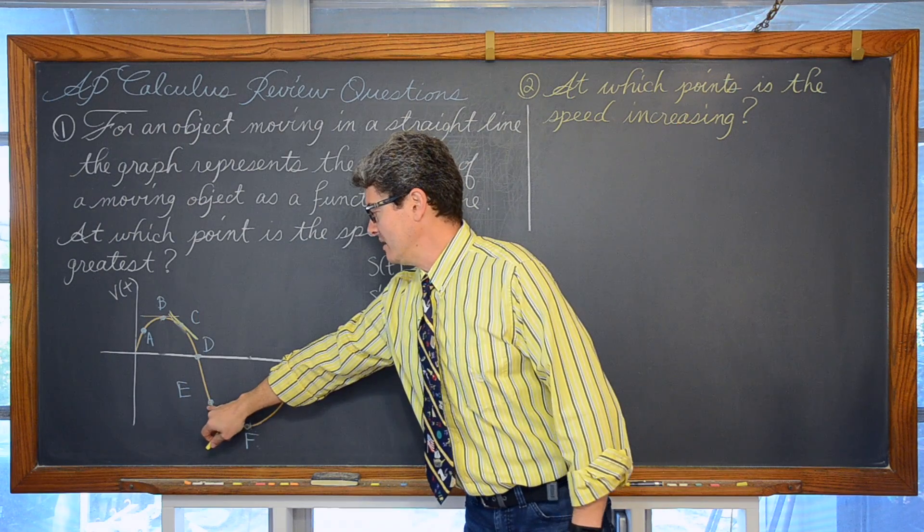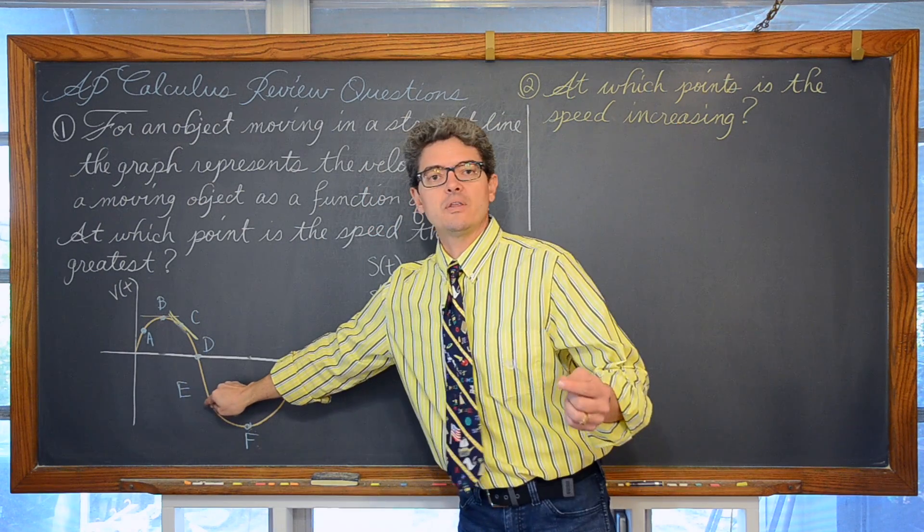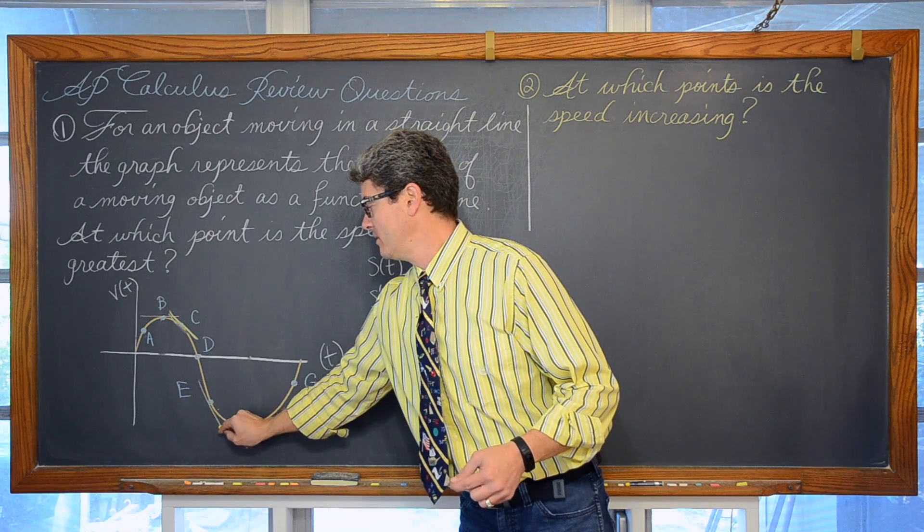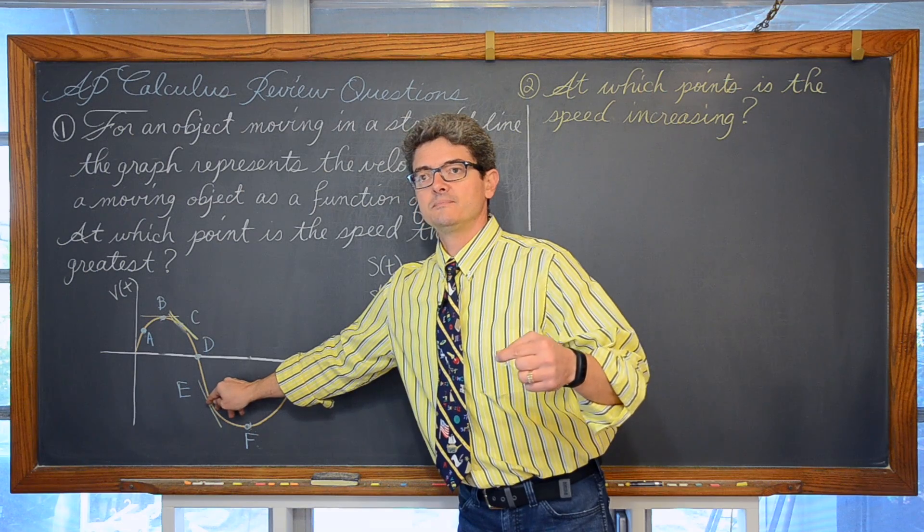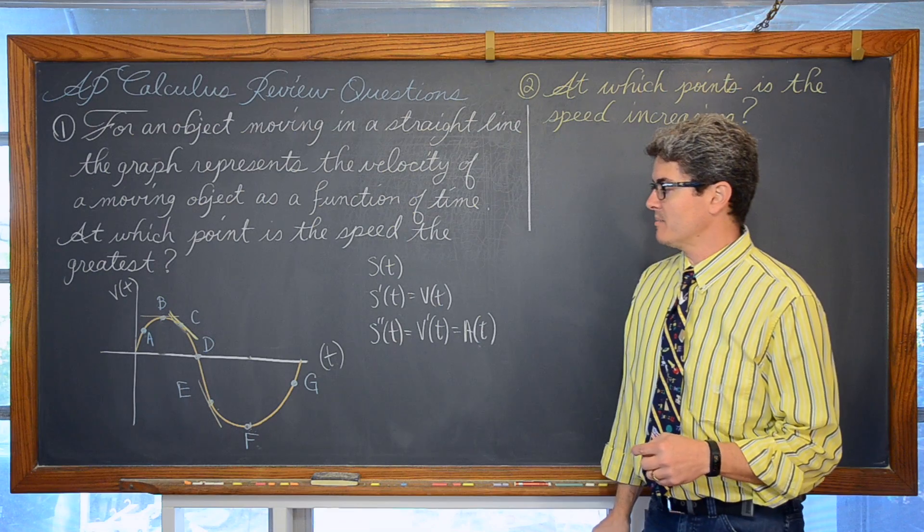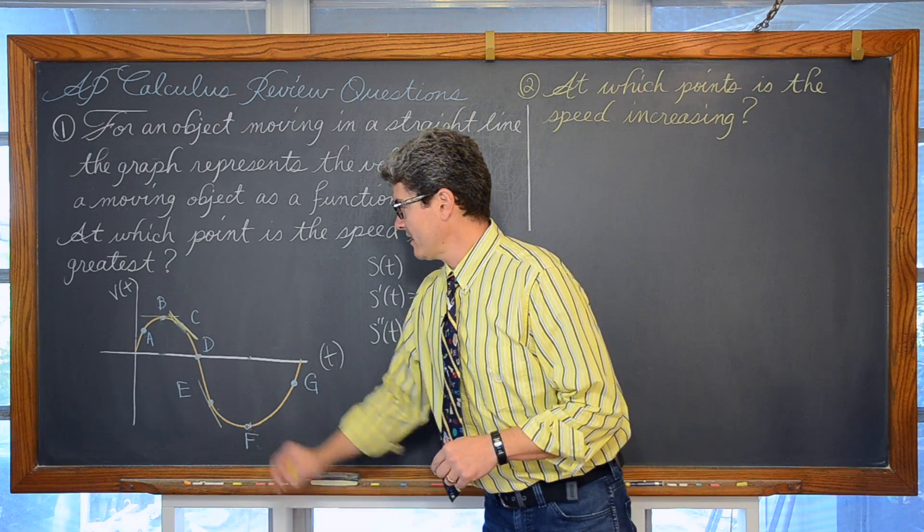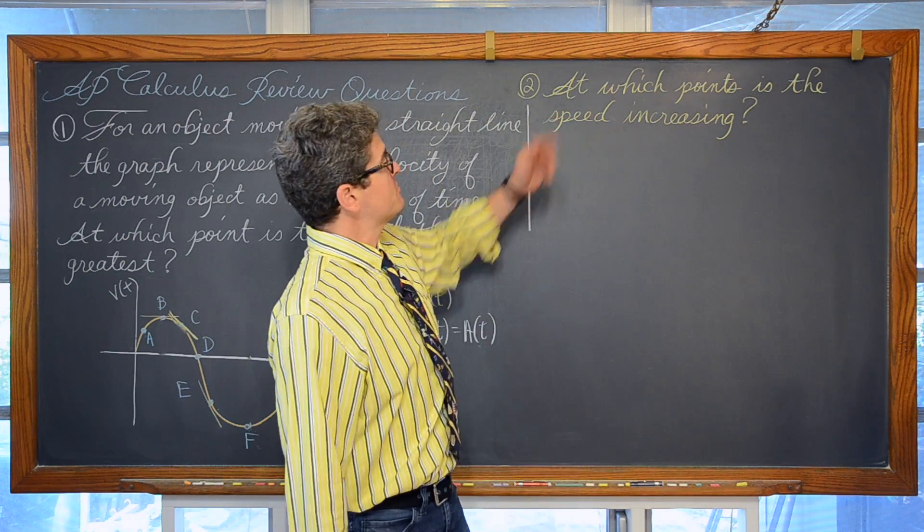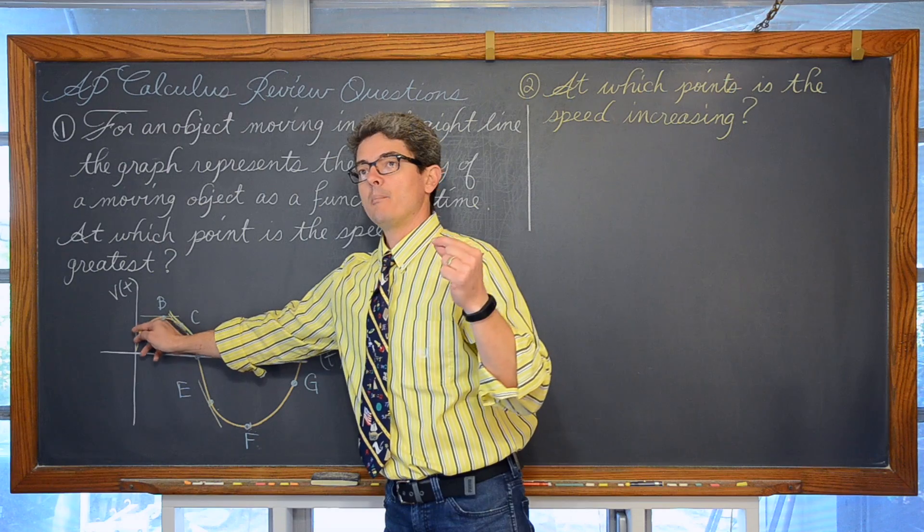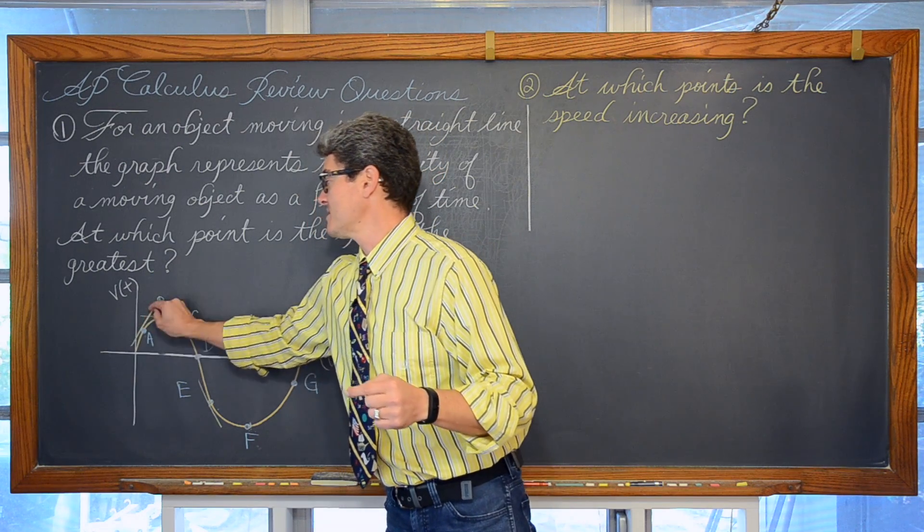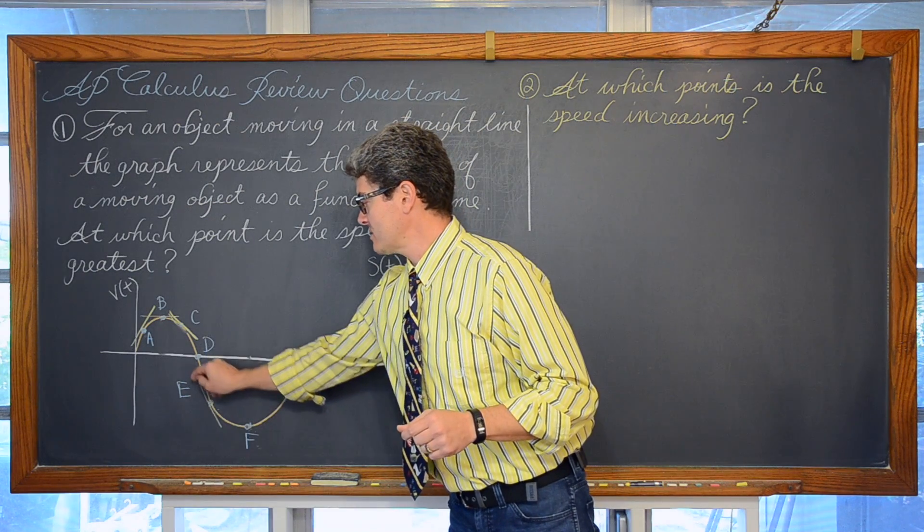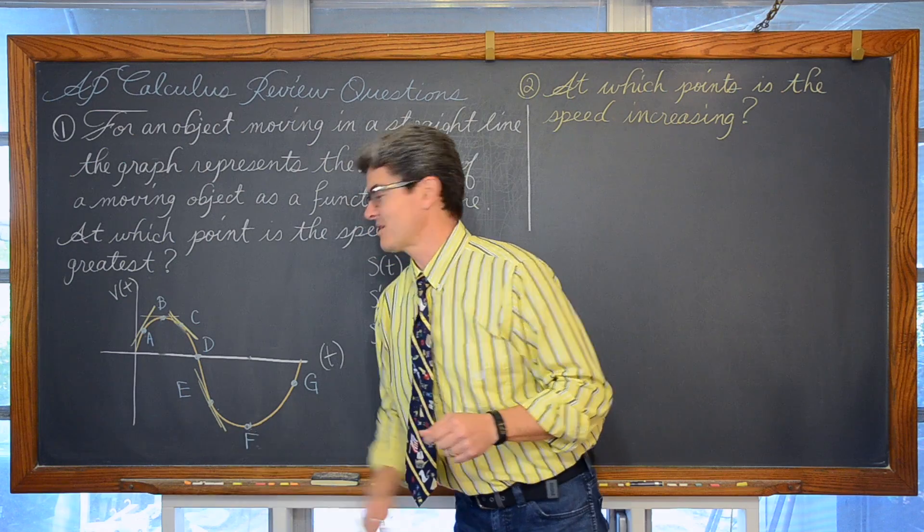And now down here at e, the velocity graph is below the t axis so the velocity is going to be negative, but so is the slope. So if the velocity and the acceleration have the same sign, then that object is picking up speed. And so the final answer as far as at which points is the speed increasing, the speed is going to be increasing at a because you have a positive velocity and a positive acceleration, and at e because you have a negative velocity and a negative acceleration.